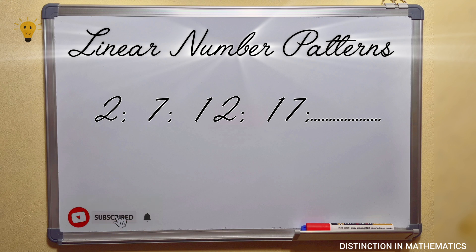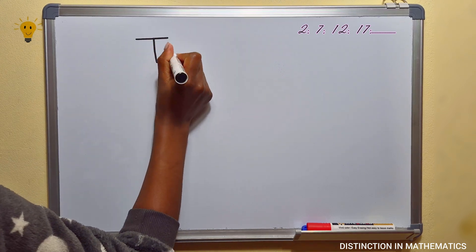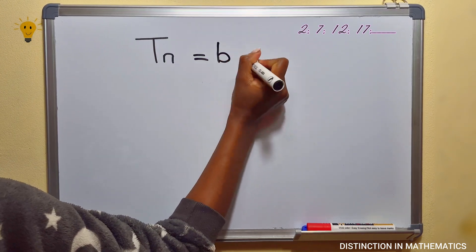Now consider the sequence 2, 7, 12, and 17. The difference between these numbers is 5. If you minus 12 from 17, you get 5. 12 minus 7 is 5, and 7 minus 2 is 5. If you plot these numbers on a graph, they will form a straight line, and that is why it is a linear number pattern. The general term for linear number patterns is Tn equals bn plus c.